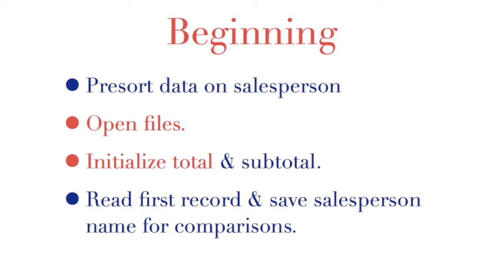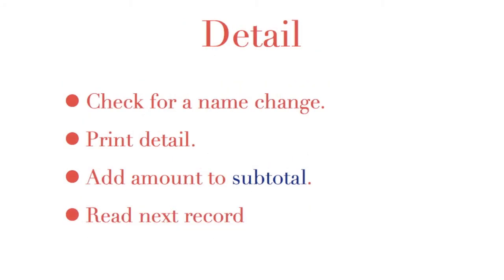The last thing to do at the beginning is to read that first record and save the salesperson's name for later comparison. In our repetitive tasks, the only change is to add the amount to the subtotal rather than the total.